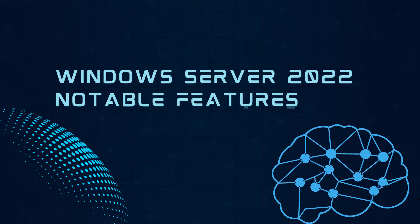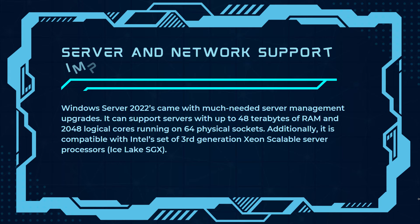Microsoft released Windows Server 2022 with a host of new features missing from previous iterations of the operating system. Some of the most notable features include server and network support improvements. Windows Server 2022 came with much-needed server management upgrades — it can support servers up to 48 terabytes of RAM and 2048 logical cores running on 64 physical sockets. Additionally, it is compatible with Intel's third-generation Xeon Scalable server processors.